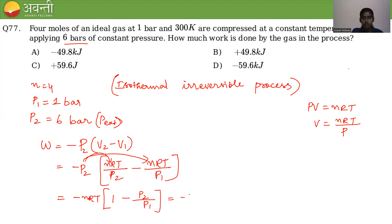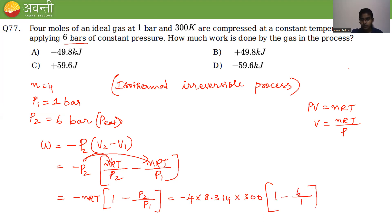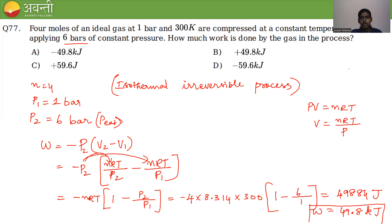Substituting: n=4, R=8.314 J, T=300 K, P₂=6 bar, P₁=1 bar. w = −4 × 8.314 × 300 × (1 − 6) = 49,884 J ≈ 49.8 kJ. Option B is the correct answer.